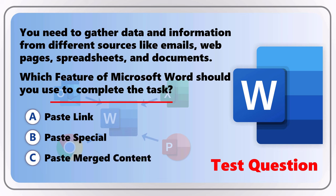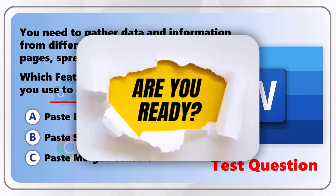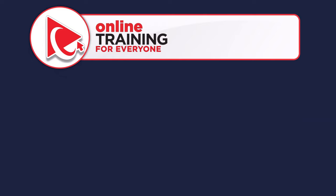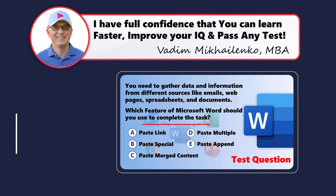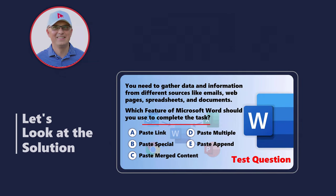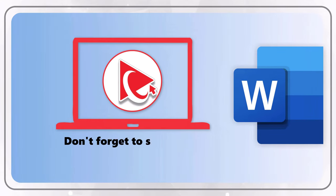Choice C, Paste Merged Content; Choice D, Paste Multiple; and Choice E, Paste Append. Take a close look to see if you can recognize the right feature of Microsoft Word. Let's move on so I can share how I cracked the solution. And if you've got a unique method or better way, I'd love to hear it — don't forget to share your approach in the comments below.